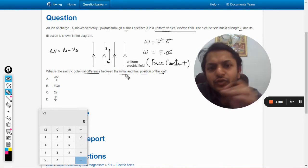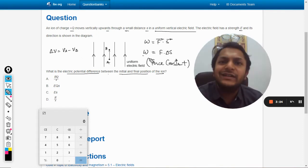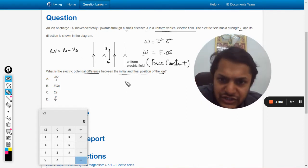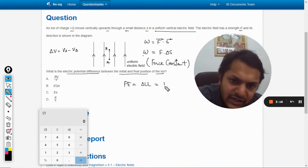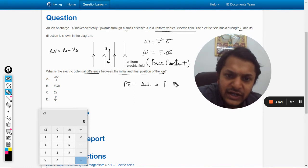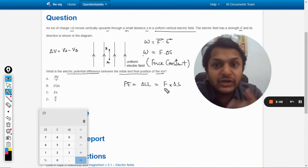So this work done can be written as potential energy. So potential energy, or you can write by U, so delta U will be given by force into displacement delta s. So this is known as electric potential energy which is stored in the system because the work is done in taking the charge from point A to point B.